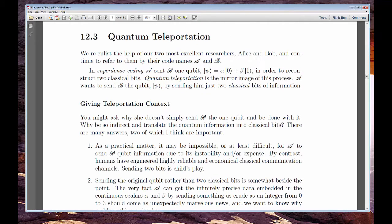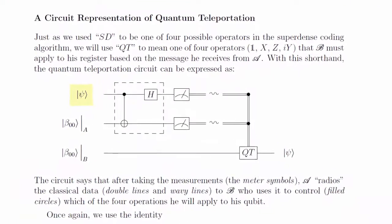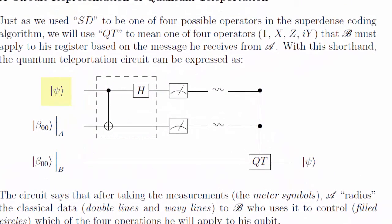The second algorithm has the name quantum teleportation, which evokes images of sugarplum science fiction. This time, Alice's goal is to send Bob a complete qubit, which in a way contains a value that represents one of the infinitely many possible superpositions that a state can be in.